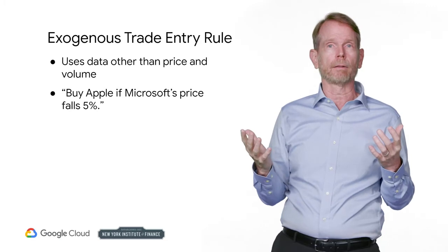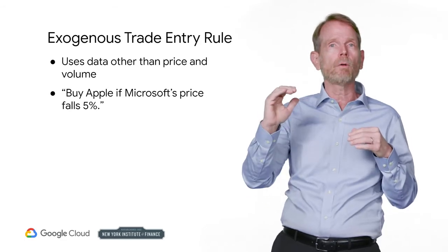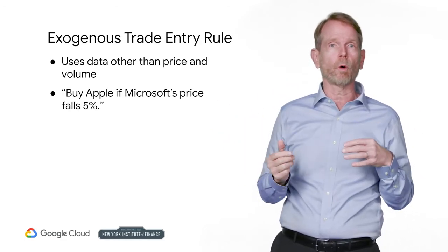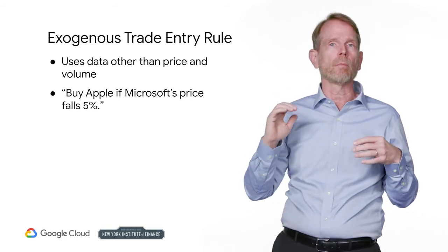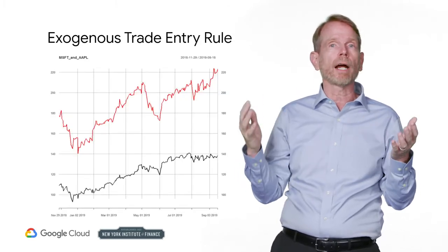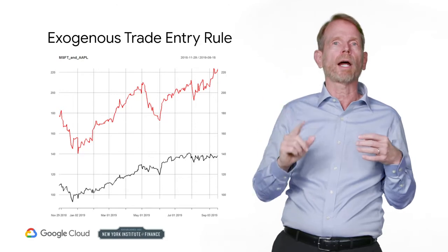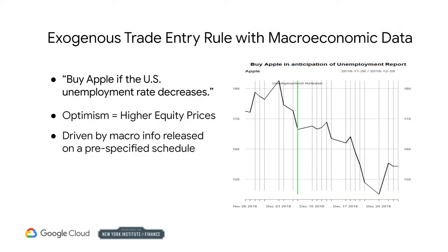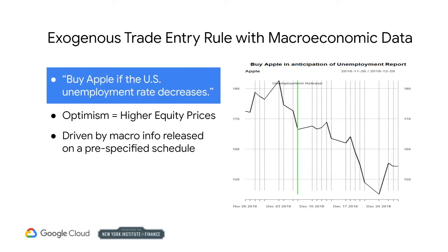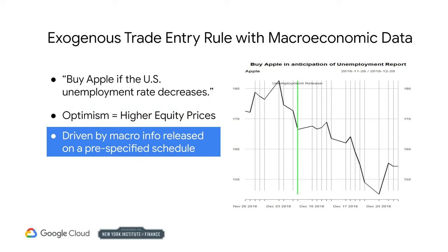But what if you want to use other data? Then you would use an exogenous rule. An exogenous rule requires you to watch not only Apple, but other securities or data values as well. For example, you might say: buy Apple if Microsoft's price falls 5%. You may think that lower sales of Microsoft computers may mean increased sales of Macs, so you must also track the price of Microsoft. Here's an exogenous rule based on macro data: buy Apple if the U.S. unemployment rate decreases. You see less unemployment as a stronger economy, and you believe this optimism can translate into higher equity prices for Apple. Therefore, you base your entry signal on macroeconomic reports.